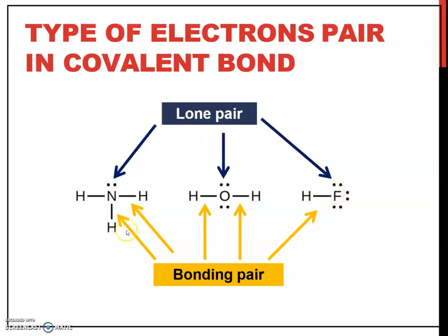For lone pairs, it means electron pairs that are not shared with another atom. Lone pairs are not involved in covalent bonding and not shared by another atom. For example, in NH3 there is one lone pair. For H2O, there are two lone pairs at the central atom. For HF, there are three lone pairs on the fluorine atom.